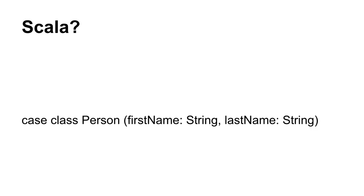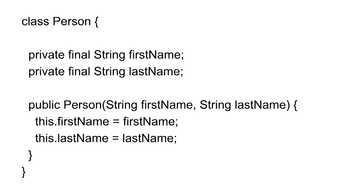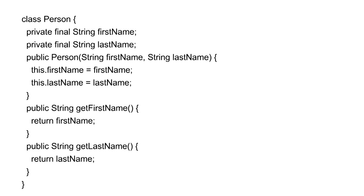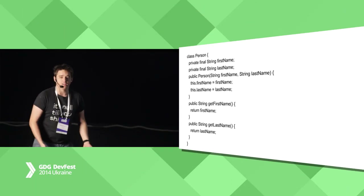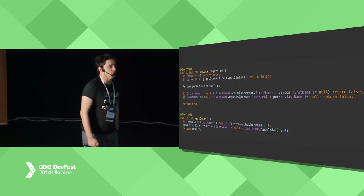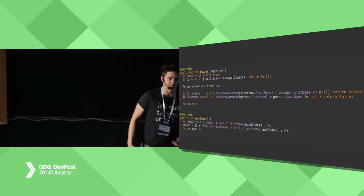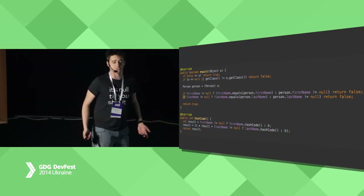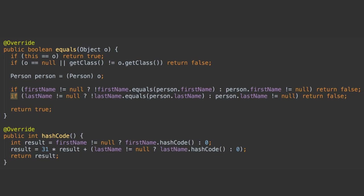So let's try to write something similar that works in the same way in Java. First of all we need to create the class that will have immutable final fields like first name and last name. And we create the constructor. We also need to create some accessors so our fields are available from outside of the class. And we need to create the equals and hashCode implementation so our structure works fine with the Java collections. This is actually automatically generated IDE code.